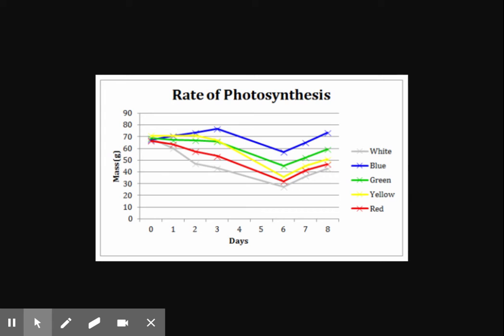Gray light is a control. Gray is a combination of all colors of light. This should be similar to the sun on the plants, yet it had the lowest photosynthetic rate.